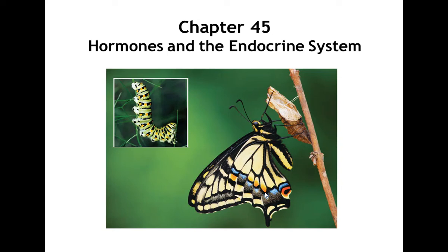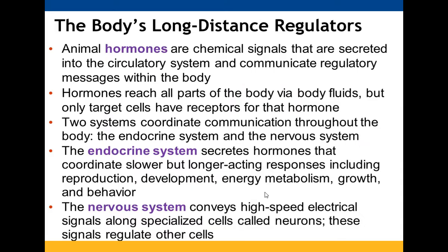Chapter 45 is all about the endocrine system and hormones. Hormones act as your long-distance regulators — chemical signals that are secreted into your circulatory system and are able to send messages throughout the body. They can reach all parts of the body through your body fluids, but they can only interact with target cells that have receptors for them.